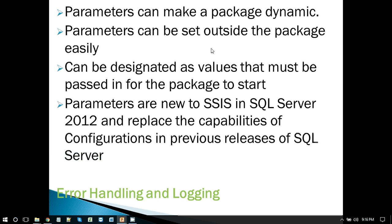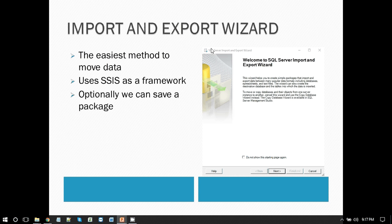Parameters are new to SSIS in SQL Server 2012, and they replace the capabilities of configuration. Before SSIS 2012, we used configurations — the most popular was XML configuration. When we finished developing an SSIS package and before deploying to a production server, we would generate an XML configuration file where we could change connection strings, SQL Server names, database names, folder paths, or file paths. Also important is error handling and logging: SSIS has inbuilt features to log errors and the progress of the package.